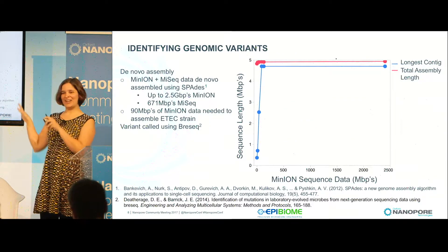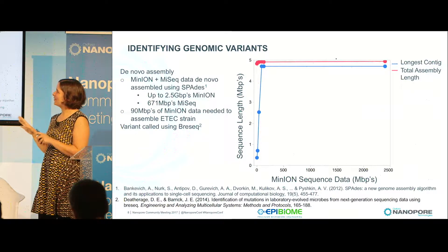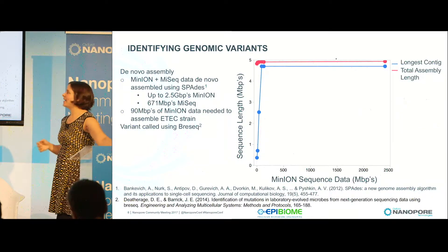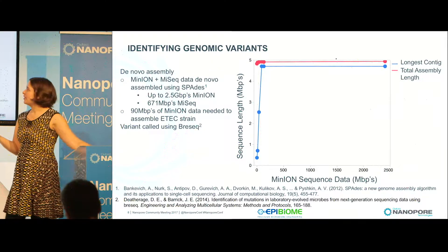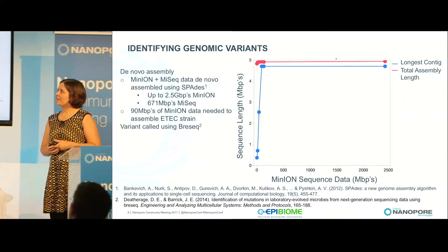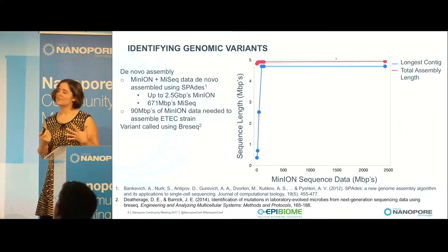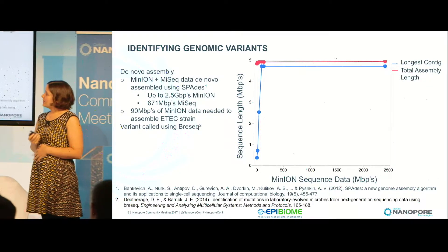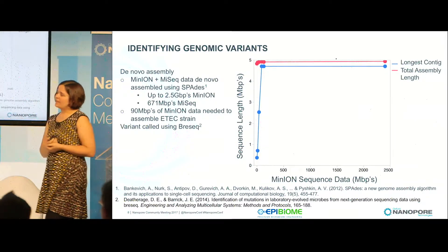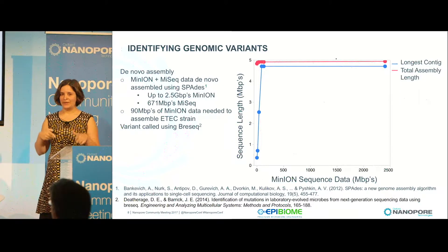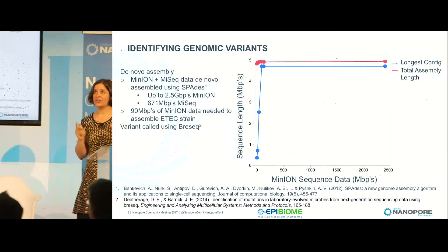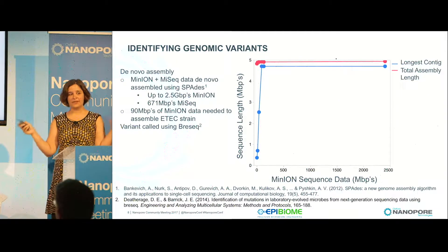We were really excited to use the MinION just to get complete bacterial genomes. We immediately got a great genome using the MinION with our MiSeq data. I went back and asked how much data I really needed to use. So I took different amounts of MinION sequence data but used all my MiSeq data with the SPAdes de novo hybrid assembler. What I found was that I could get away with about 13x coverage of the MinION data and still get my complete genome.